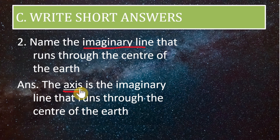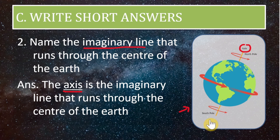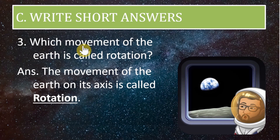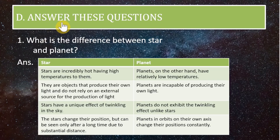The answer is axis — the axis is the imaginary line that runs through the center of the earth. Next short answer: which movement of the earth is called rotation? The movement of the earth on its axis is called rotation.